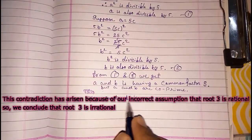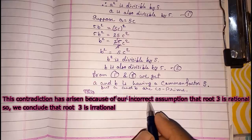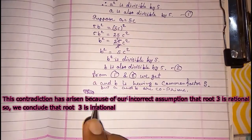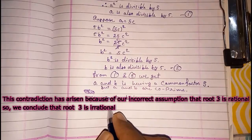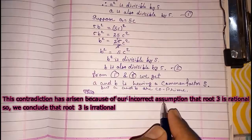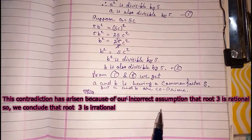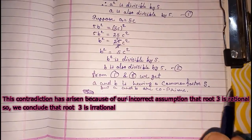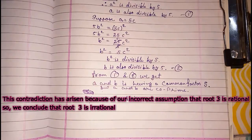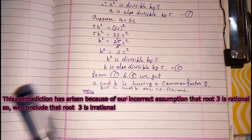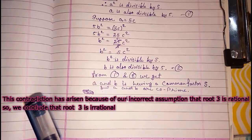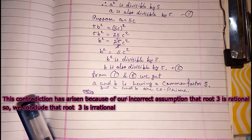This contradiction has arisen because of our incorrect assumption. So we can say that root 5 is not a rational number. And if it is not a rational number then it is an irrational number. This is how we prove that root 5 is irrational. Thank you so much for watching.